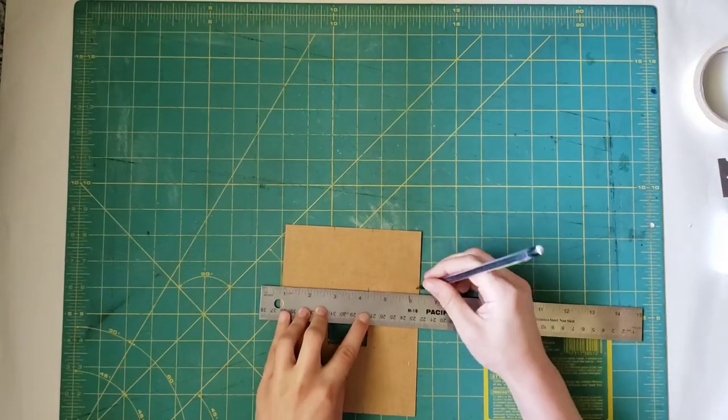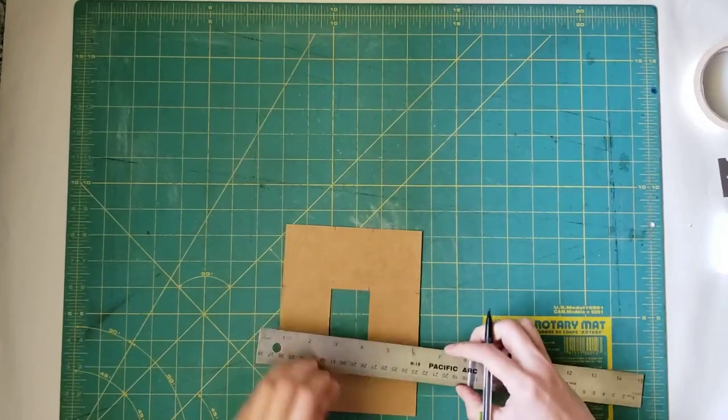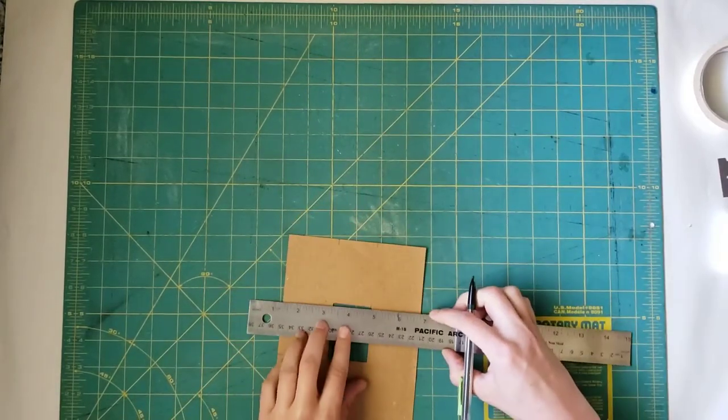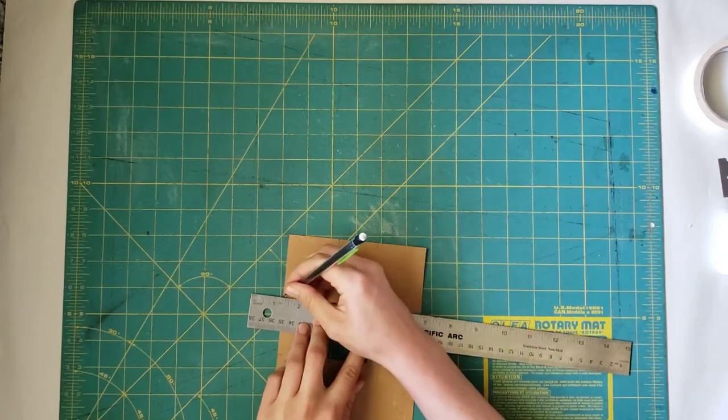Begin by drawing a line from the top and bottom of the window to the edge of the viewfinder. Just a little tick mark is fine. Next, measure carefully and make tick marks every half inch between the lines you just drew. Do this on all four sides of the viewfinder.